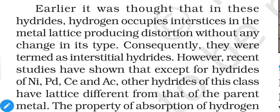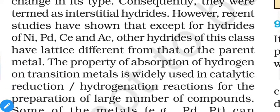Earlier it was thought that hydrogen occupies interstices in the metal lattice, producing distortion without any changes in the lattice type, and consequently these were termed interstitial hydrides. However, recent studies have shown that except for hydrides of Ni, Pd, Ce, and related metals, other hydrides of this class have a lattice different from that of the parent metal. A lattice is the three-dimensional arrangement of particles — metal particles come close together, form metallic bonds, and organize into a 3D structure along the x, y, and z axes.